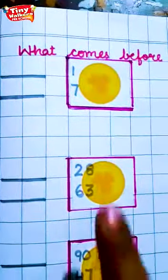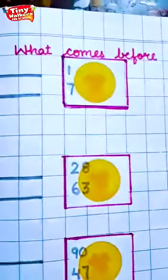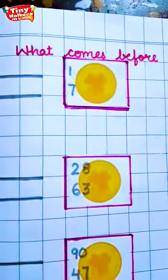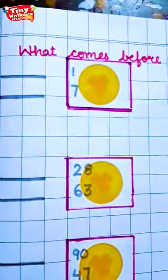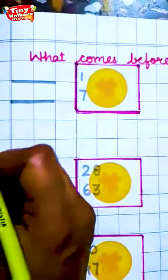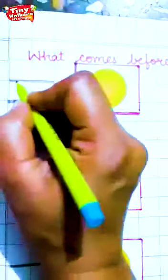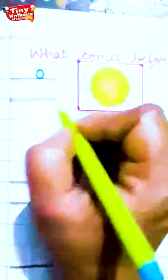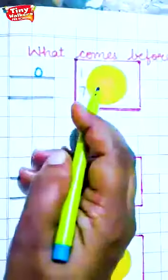Now we will do what comes before. Now tell me. Before means first. Now tell me. This is number 1. What will come before 1? Yes. 0. 0, 1.